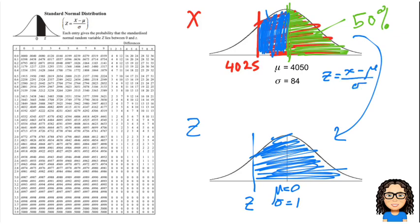Okay, so to convert from x to z, we use our formula z equals x minus the mean over standard deviation. So in this case, our x value is 4025 minus the mean which is 4050 divided by the standard deviation of 84. And that's going to give us a z value of negative 0.298. Okay, so there's my first step. So that's what I found: z is negative 0.298.